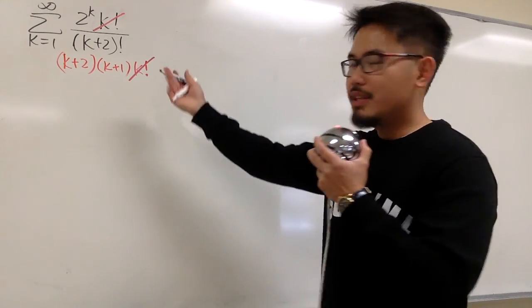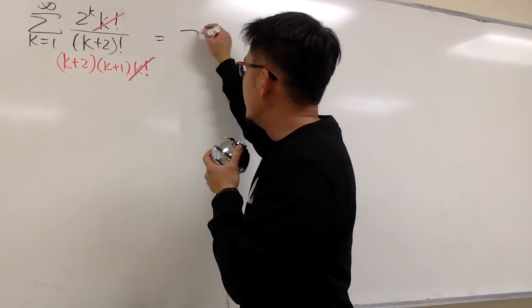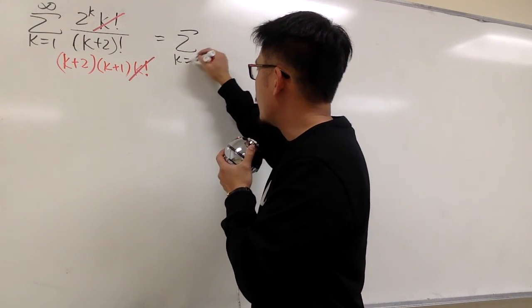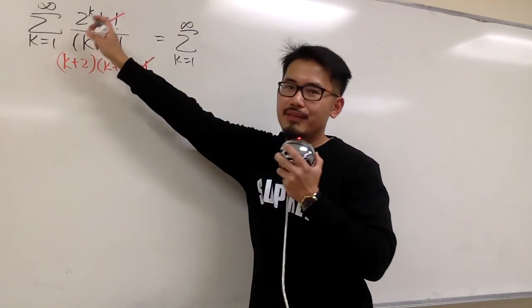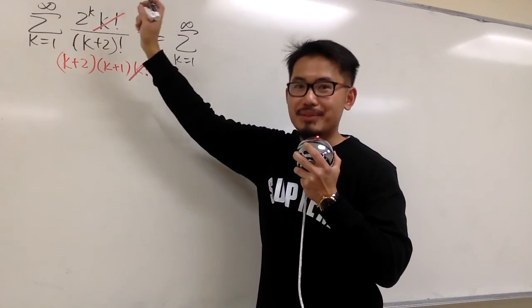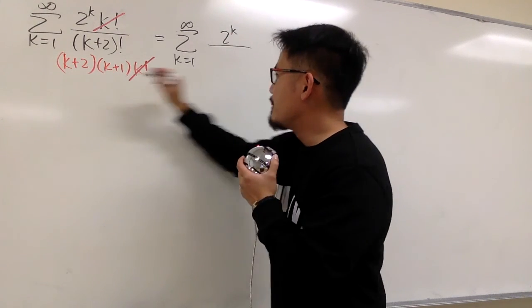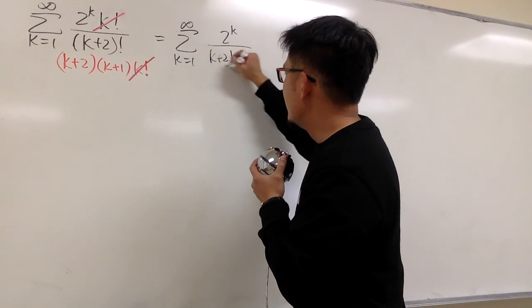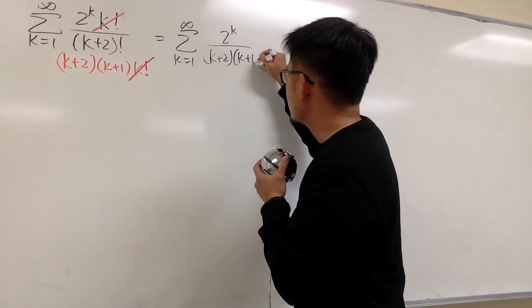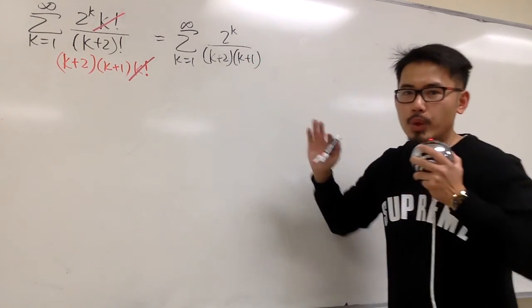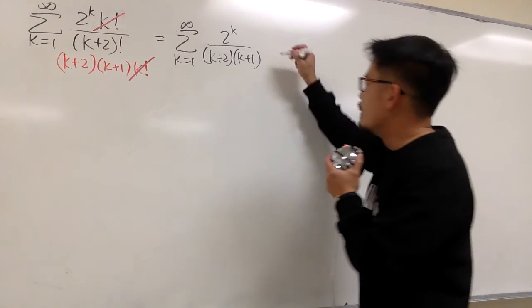In fact, this series is the same as sigma when k goes from 1 to infinity, and we just have 2 to the k power over k plus 2 times k plus 1, like this. And we will still use the ratio test.